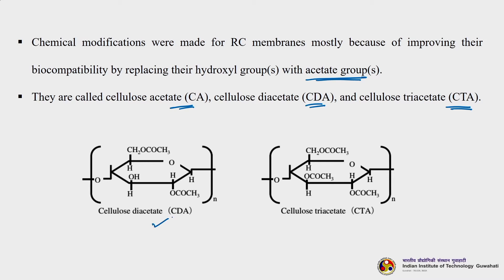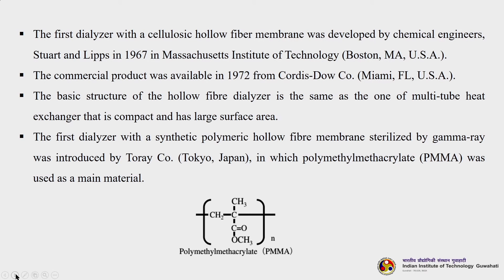The first cellulose diacetate hollow fibre membrane was developed by chemical engineers Stewart and Lipsitt in 1967 at MIT in Boston. The commercial product was available in 1972 from Cordis Dow Company in Miami. The basic structure of the hollow fibre diacetate is the same as a multi-tube heat exchanger — compact with large surface area — allowing a small physical area to achieve a large surface area.